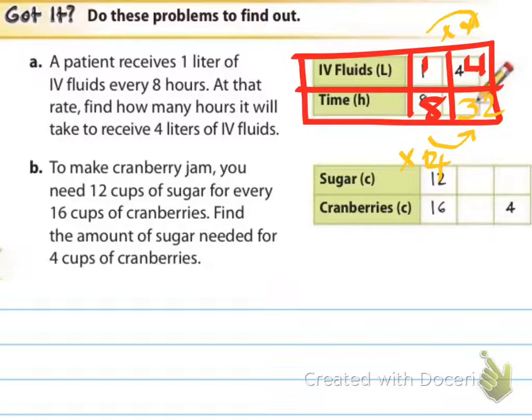For part B: to make cranberry jam, you need 12 cups of sugar for every 16 cups of cranberries. Find the amount of sugar needed for four cups of cranberries. Go ahead and set up this table on your own, and I'd like for you to come up with this answer. Press the pause button now and do this question on your own.